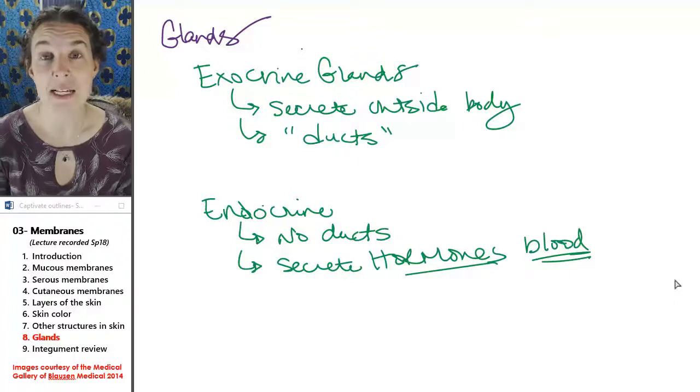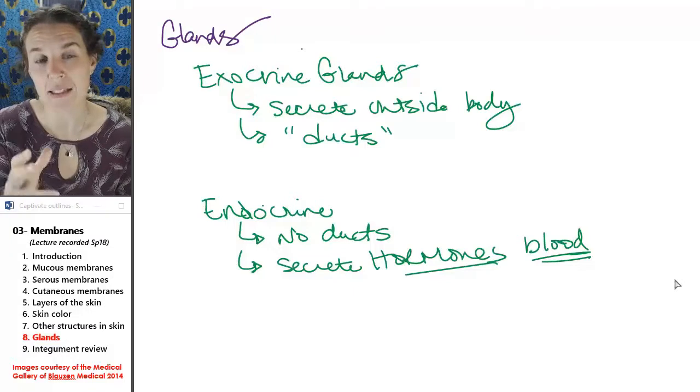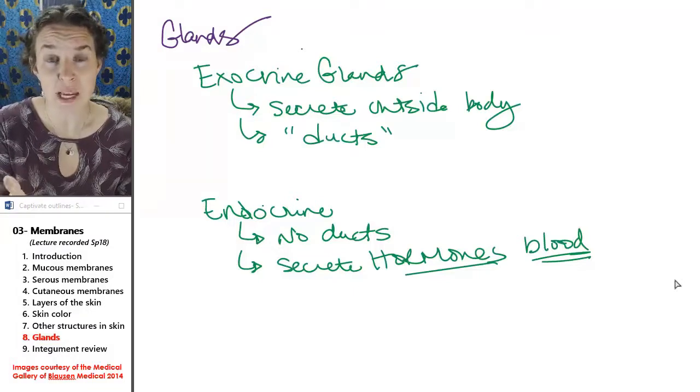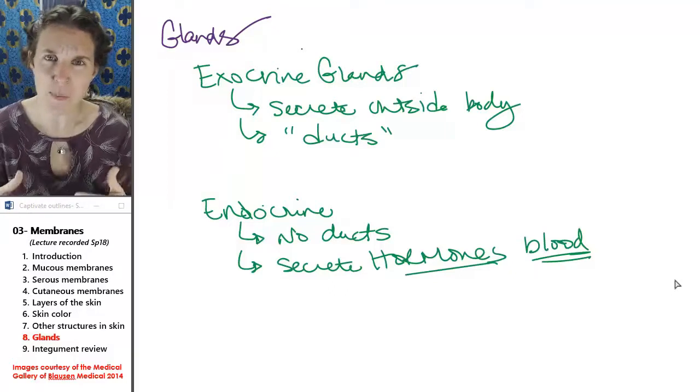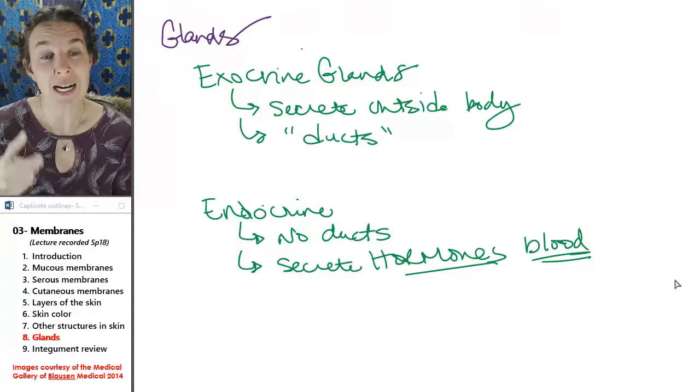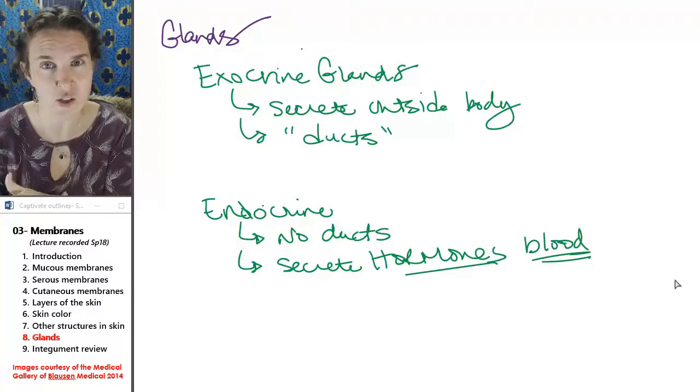There are two main kinds of glands found in your whole body, and glands are made of epithelial tissue because their primary purpose is secretion. The two main kinds of glands depend on where the substance is being secreted.